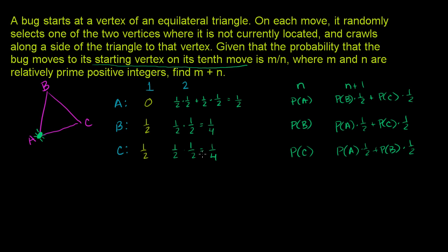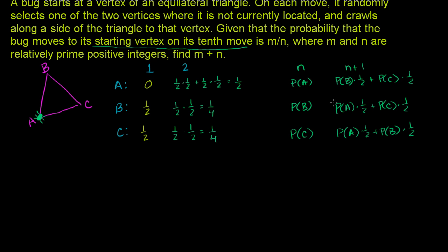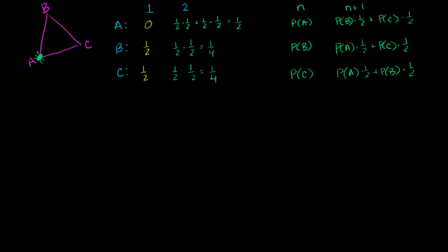Let's continue. On move 3: the probability of being at a is the average of b and c from move 2, which is the average of one fourth and one fourth — that's one fourth. The probability of being at b is the average of a and c from move 2: the average of one half and one fourth, which is the average of 4/8 and 2/8, giving 3/8. And c is also 3/8.